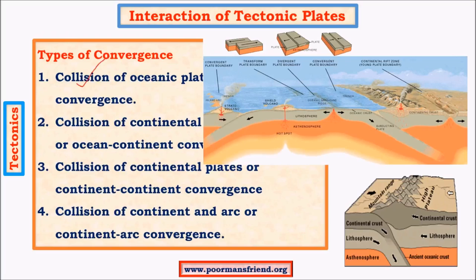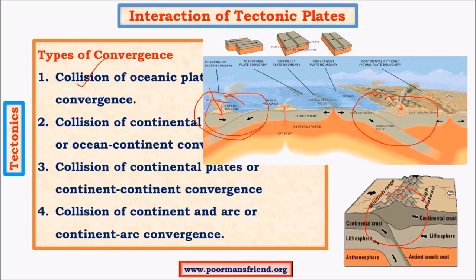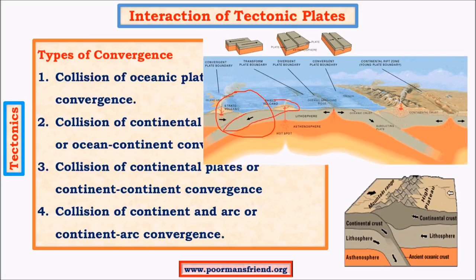Coming to the interactions: the first is the collision of ocean-ocean plates, which gives rise to an island chain called arc-islands — examples are the Philippines, Japan, and Indonesian islands. The next is the collision of continental and oceanic plates, which is the example for the formation of the Rockies and Andes. Then there is continent-continent plate collision, where the formation of the Urals is the best example. Finally, there is the collision of continent and arc, which is quite similar to ocean-ocean convergence except that instead of an oceanic plate we have a continental plate.